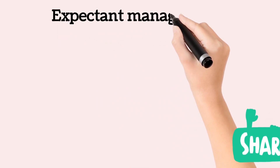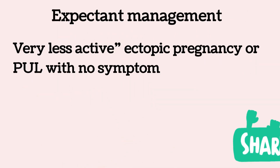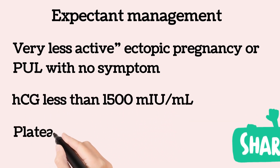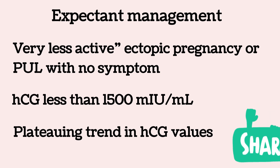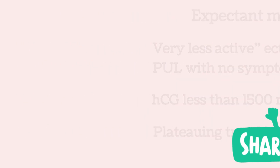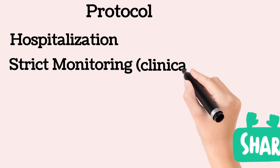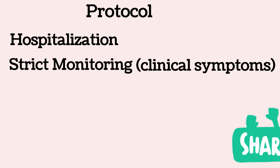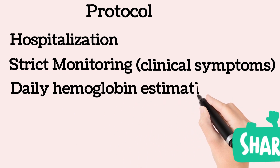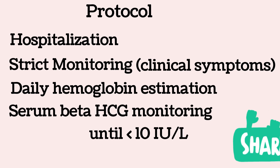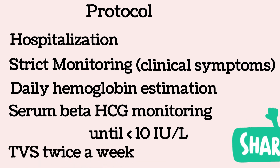Expectant management is preferred in very low-activity ectopic pregnancy or pregnancy of unknown location with no symptoms and HCG less than 1500 international units per ml with a plateauing trend. The patient should be hospitalized with strict monitoring of clinical symptoms and daily hemoglobin estimation. Serum beta-HCG monitoring should be continued until its value becomes less than 10 units per litre. Transvaginal sonography should be done twice a week.